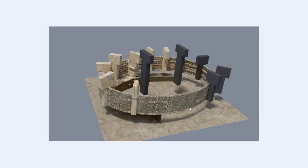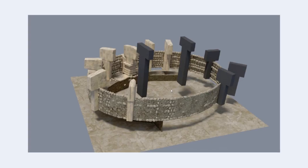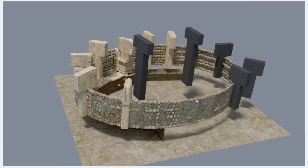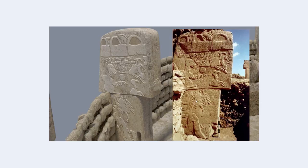Hello, this is Dan Nobles and welcome to Blender for Noobs and welcome back to this series of videos about the making of the Gobekli Tepe model. This is the last screenshot we looked at, so the next one is this close-up of pillar number 43 in enclosure D. On the right is an actual photo and on the left is the model of pillar 43 that I created — a comparison to see if I was getting close to the actual.